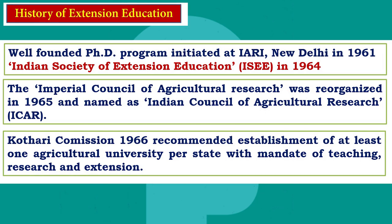ICAR — earlier known as the Imperial Council of Agriculture Research — became the Indian Council of Agricultural Research in 1965. The Kothari Commission came in 1966 and recommended establishment of at least one agricultural university per state with the mandate of teaching, research, and extension. Today we have more than 70 agricultural universities and more than 100 ICAR institutes in the National Agricultural Education Research System (NARES). These developments established extension as both a discipline and a profession.